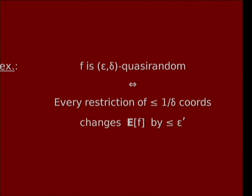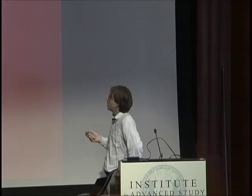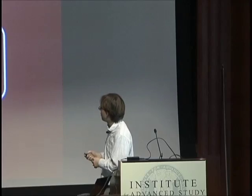As we saw in earlier talks, it's very nice to look at the distinction between structured functions and quasi-random functions. For us, structure will be something much simpler: we'll just look at the ultimate non-quasi-random functions, dictators. So in this talk we'll often think about the difference between dictator functions — just the projection functions — and quasi-random functions. I'm going to give you a little example of that, studying the sum of the squares of the degree-one Fourier coefficients of a Boolean function.